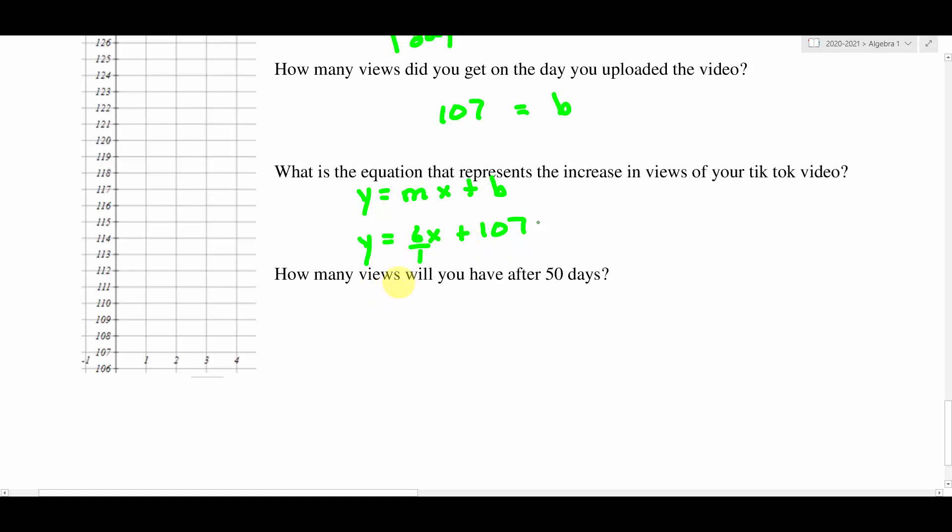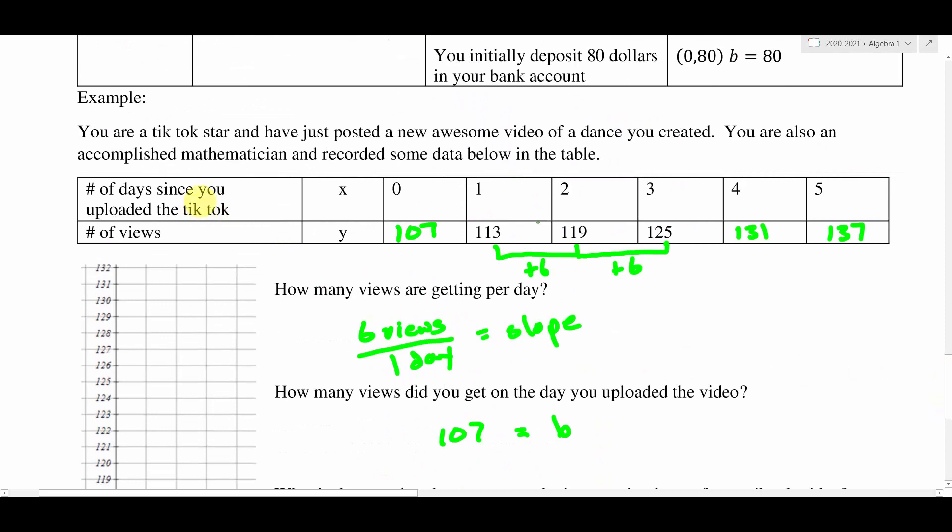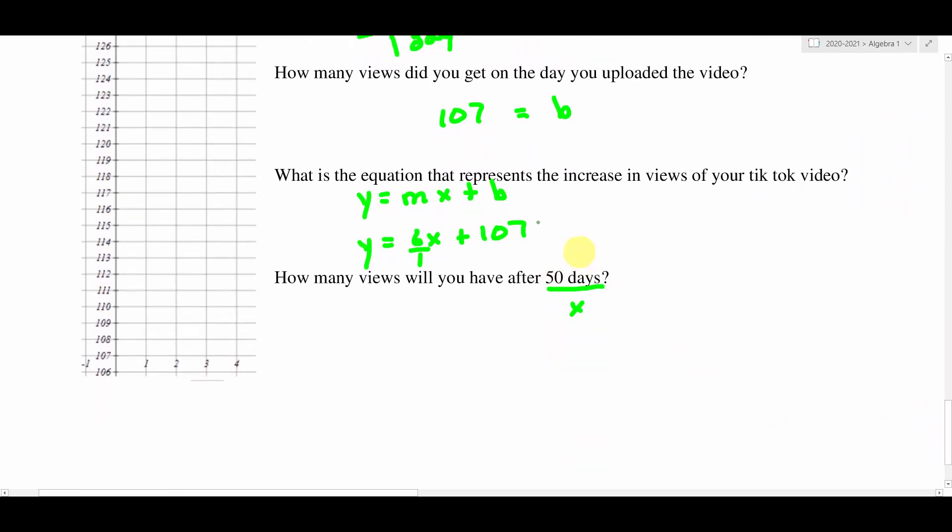Now the last thing, it wants us to make a prediction. So if I were to fast forward 50 days into the future, could we figure out how many views we're going to have after 50 days? Assuming that we get six more views per day, we sure can. So 50 days. This piece of information that they're giving us here is an x value. So I go back up to my table and I look. It says the number of days since you uploaded the TikTok video, that's being represented by the variable x. I don't want to continue this table all the way to day 50. That would just be too much work. So what I'm going to do is I'm going to take this 50 since it's an x value and I'm going to plug it into my equation like an input output. So I'm going to say y equals, and I'm going to say 6 times 50 plus 107. This is why we build the equation, so that we can make these predictions really quick.